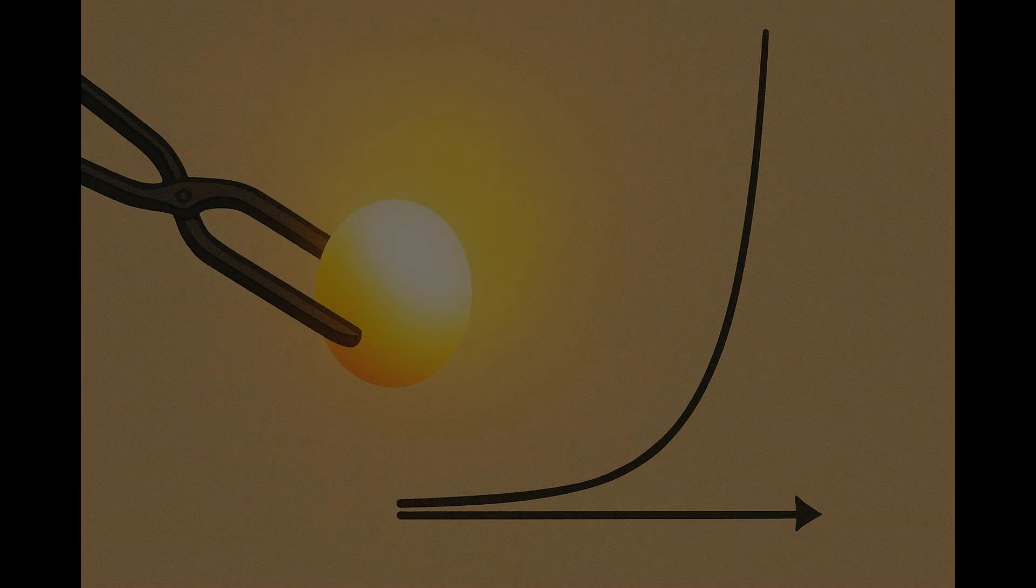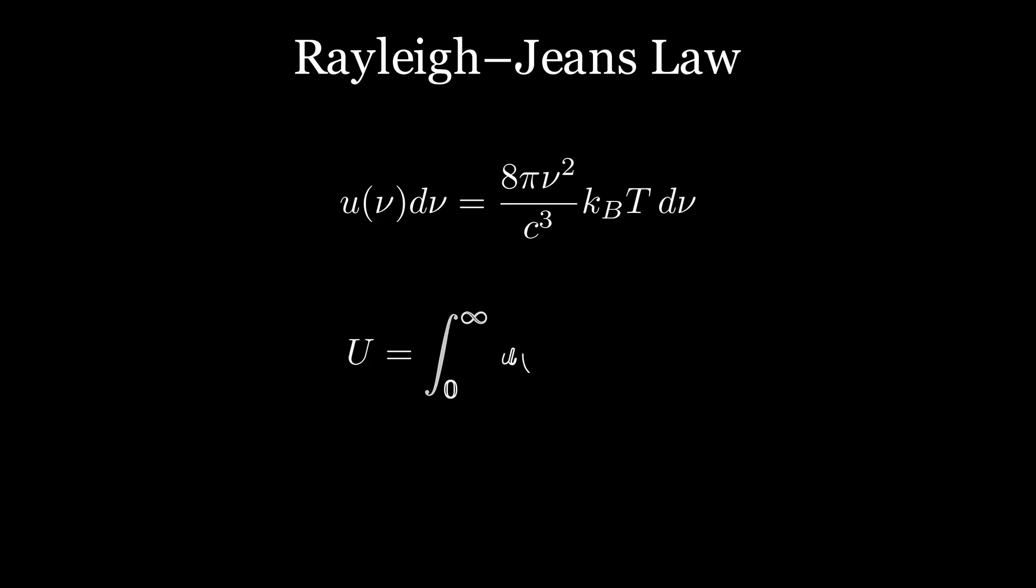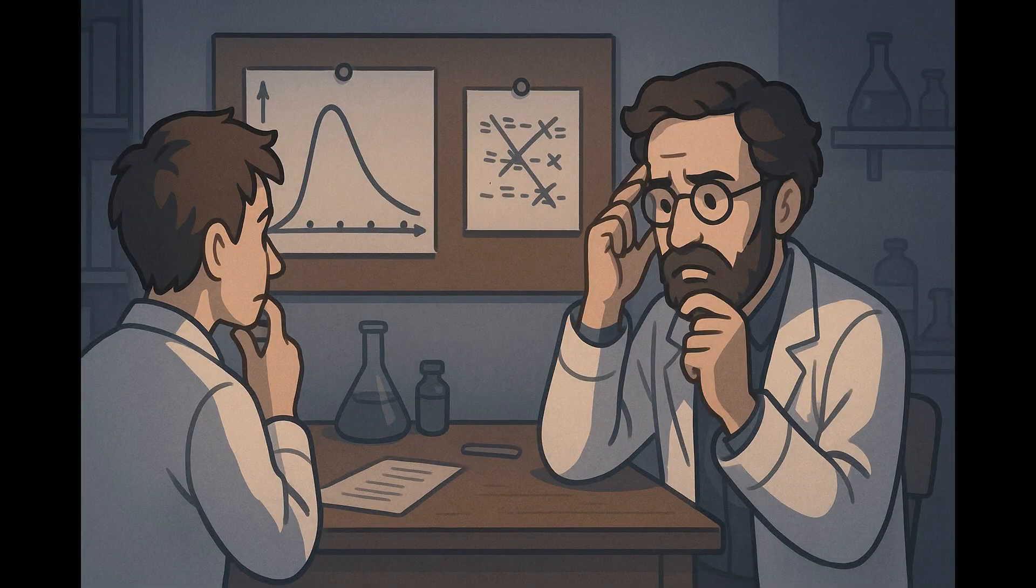In the lab, hot iron glowed red, then yellow, then white. But the equations predicted infinite energy. The classic formula works at low frequencies, like radio, infrared. But at high frequencies like UV, the formula predicts infinite energy emission. Something was not right.